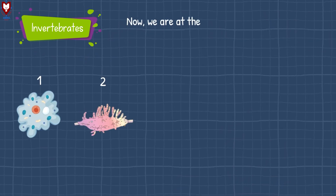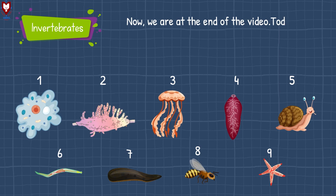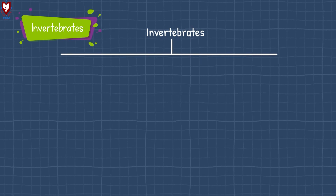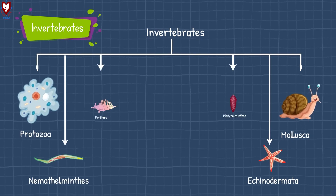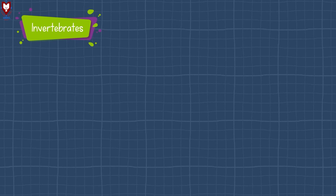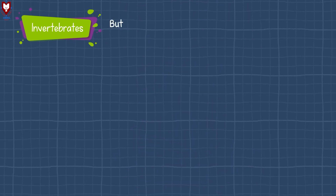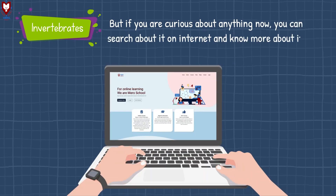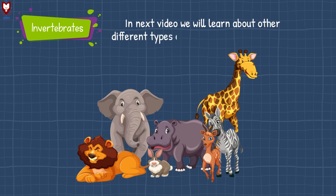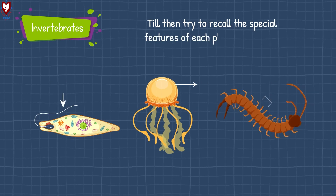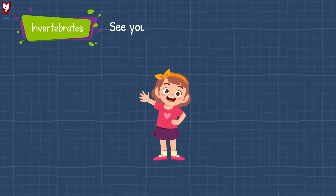Now we are at the end of this video. Today, we learned about 9 different phyla of invertebrates. If you are curious about anything, you can search about it on the internet. In the next video, we will learn about other types of animals that have a backbone. Till then, try to recall the special features of each phylum's animals. See you in the next video.